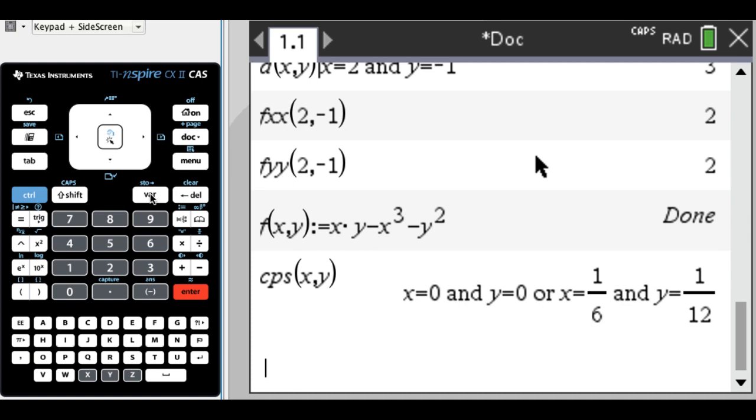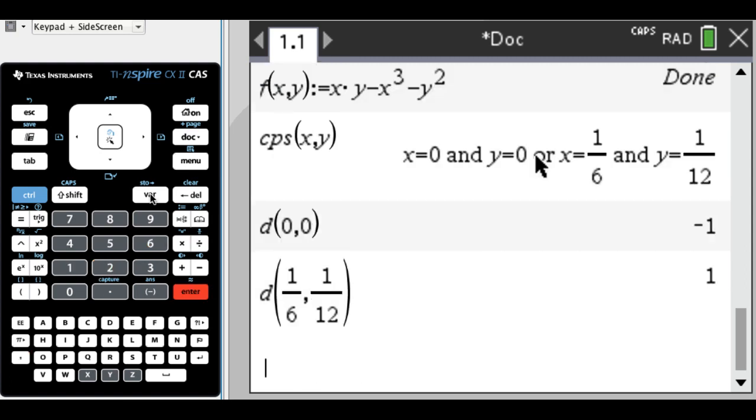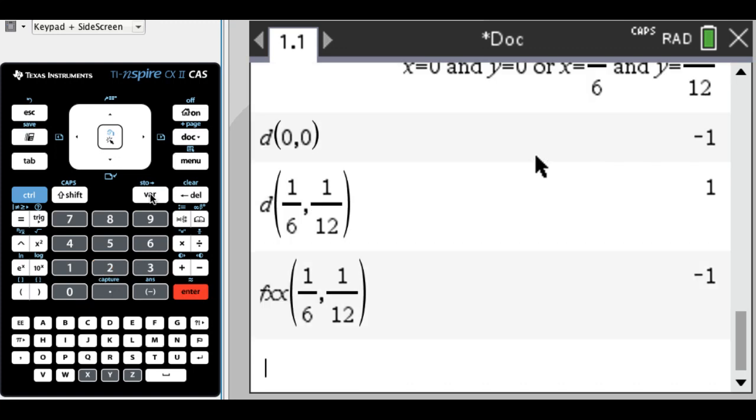Now what I want to do is I need to evaluate d at both of these. So I'm going to do 0, 0, I get negative 1, so that's a saddle point, and I'm done. I'm going to go back and do it again, critical points, nope, sorry, d rather, of this other one, so 1, 6 comma 1, 12, I get positive, which means I need to go one step more. I need to find x, x of 1, 6 comma 1, 12, and I get a negative, which means the trace is concave down, which means we're at a maximum, so relative maximum at 1, 6, 1, 12, and a saddle point at 0, 0.